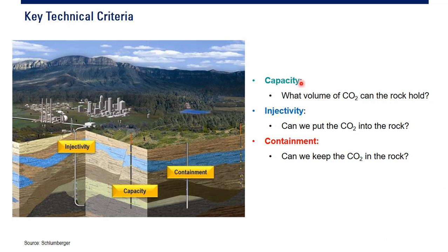These are the three most important things for CCUS. First, capacity: what volume of CO2 can the rock hold — seberapa banyak yang bisa ditampung oleh batuan? Second, injectivity: can we put the CO2 into the rock — bisa nggak kita inject CO2-nya ke dalam reservoir? Third, containment: can we keep the CO2 in the rock, or will there be leakage — can we contain the CO2 permanently? These are the three most important things: capacity, injectivity, and containment.